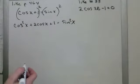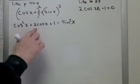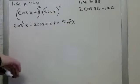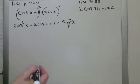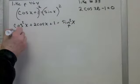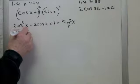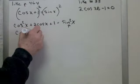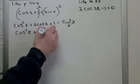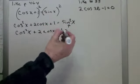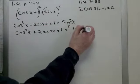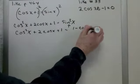So when I square this, I get cosine squared x plus 2 cosine x plus 1 equals sine squared x. Now, it sure would be nice if I could have it all in cosine or all in sine. And then I remember there's a trig identity for sine squared: 1 minus cosine squared.